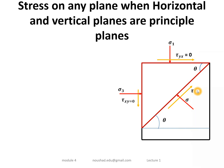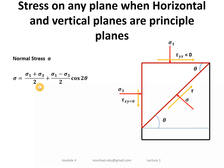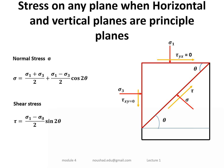For a general inclined plane between the principal planes, the normal stress is: sigma equals (sigma_3 + sigma_1)/2 plus (sigma_1 − sigma_3)/2 · cos 2θ, and the shear stress is: tau equals (sigma_1 − sigma_3)/2 · sin 2θ.